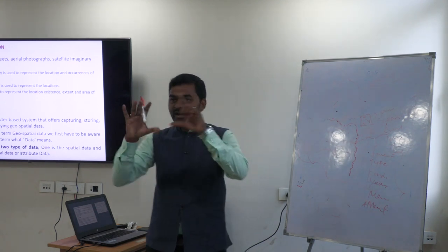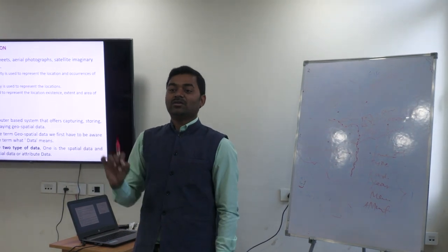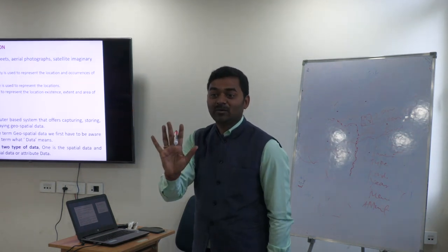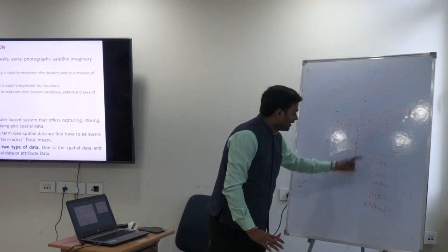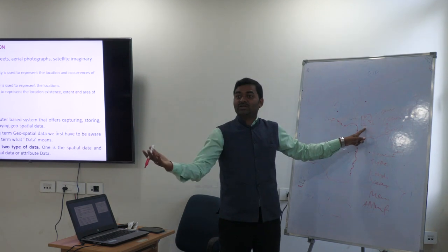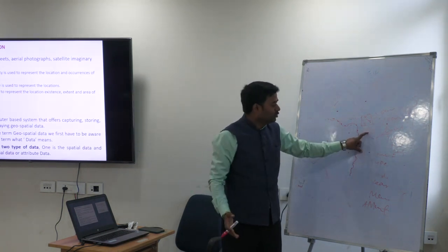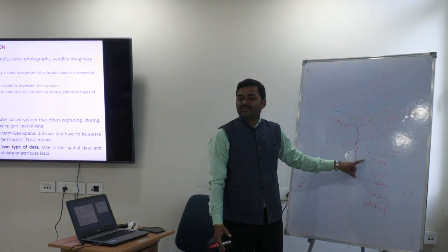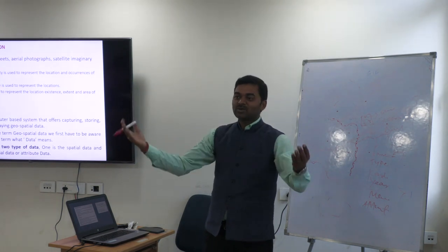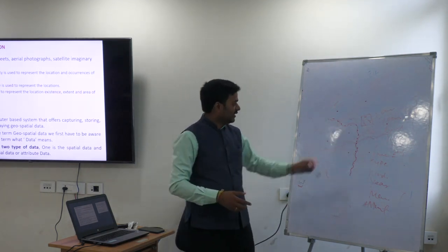Spatial data is what we can see with our eyes on the surface of the earth — geographical data that has latitude and longitude and can be drawn in a map. Non-spatial data cannot be seen with the eye, but it is linked to spatial features to get information. When you link geography and information together, it becomes a Geographical Information System. That linking is possible only with GIS software, and that is the power of GIS.